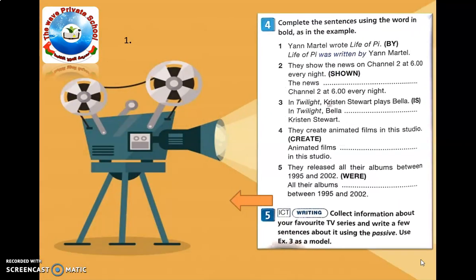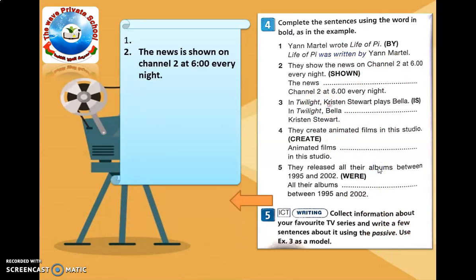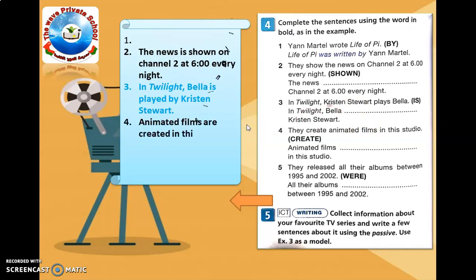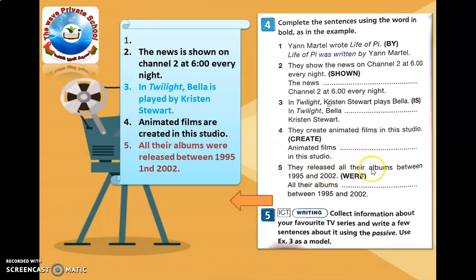In activity four, complete the sentences using the words in bold. Number 1: 'The news is shown on Channel 2 at six every night' — 'is' because it happens every night, making it present simple. Number 3: 'In Twilight, Bella is played by Kristen Stewart' — also present simple. Number 4: 'Animated films are created in this studio' — present simple. Number 5: 'They released all their albums between 1995 and 2000,' so the passive is 'All their albums were released' — this one is past simple.